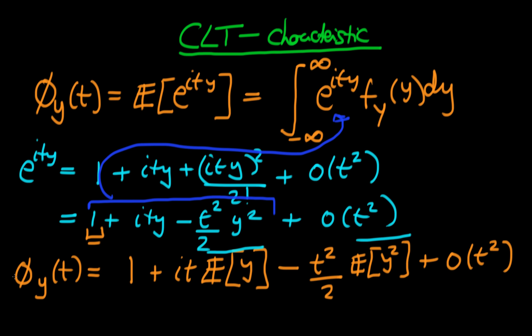Knowing the characteristic function makes it very easy to extract the moments of the distribution. Differentiating the characteristic function with respect to t and evaluating at t equals 0 gives whichever moment you seek, corresponding to the number of times you differentiate. We won't go further into that here as we don't need it for our purposes.